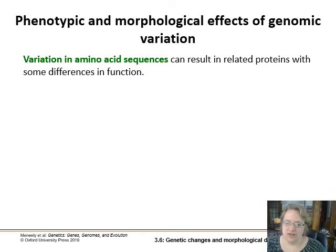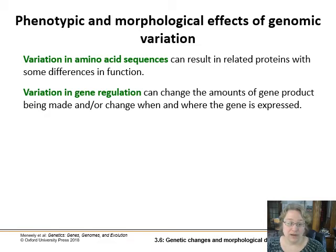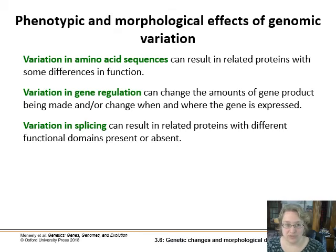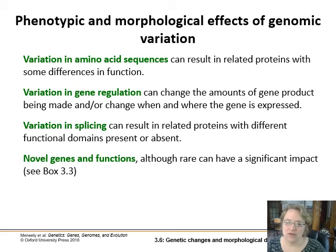The direct effect of a change in DNA sequence is a change in amino acid sequence, producing a protein with differences in shape that affect its function. We can also get variation in gene regulation — if a promoter sequence changes, that affects how, where, when, and how much of the gene is expressed. Splicing can produce related proteins called isoforms, with different functional domains depending on which exons are included. New genes can just pop up with new functions, but that's extremely rare — though when it does happen it can have very significant impact. Look at box 3.3 about origins of novel genes.